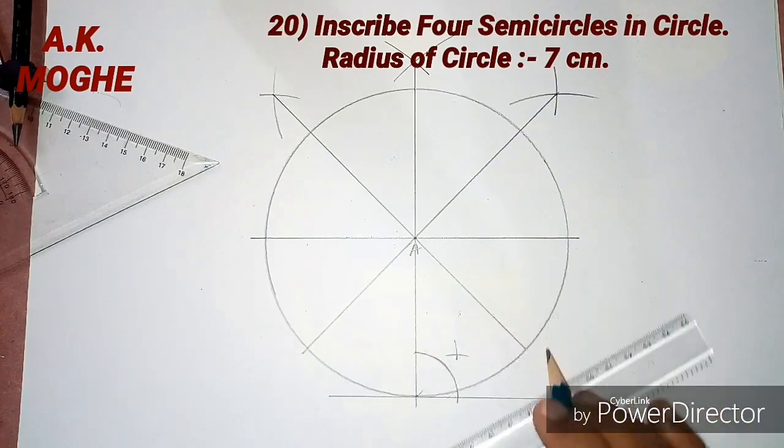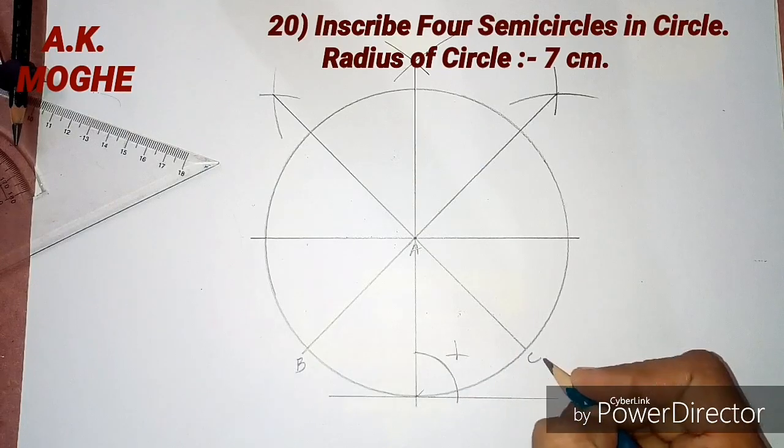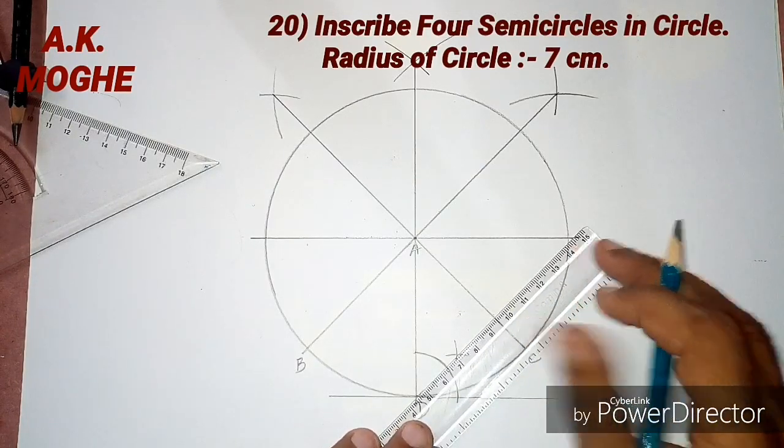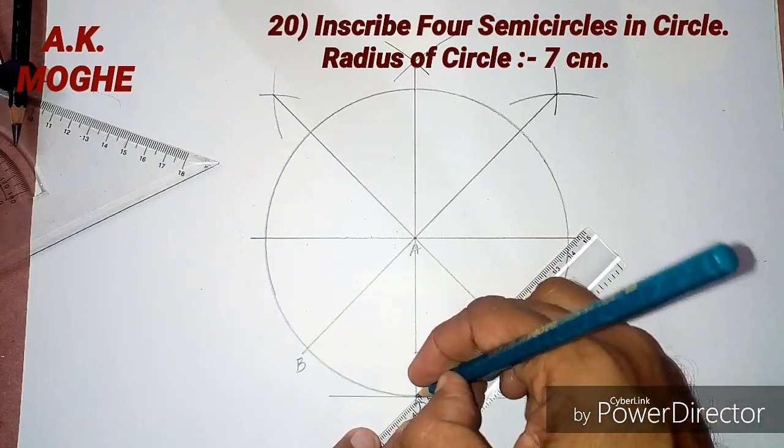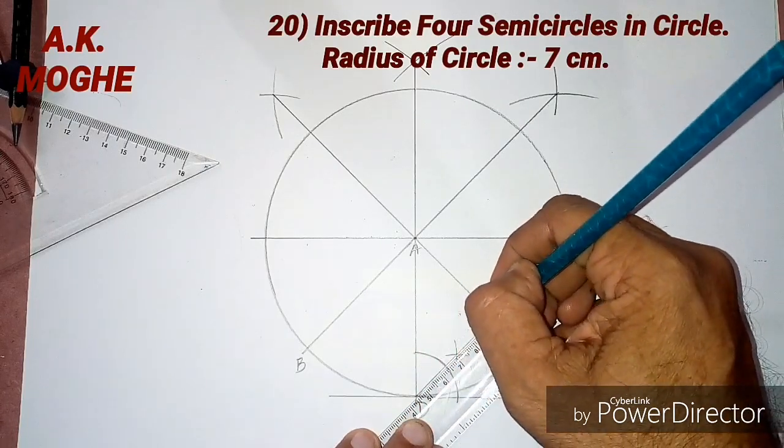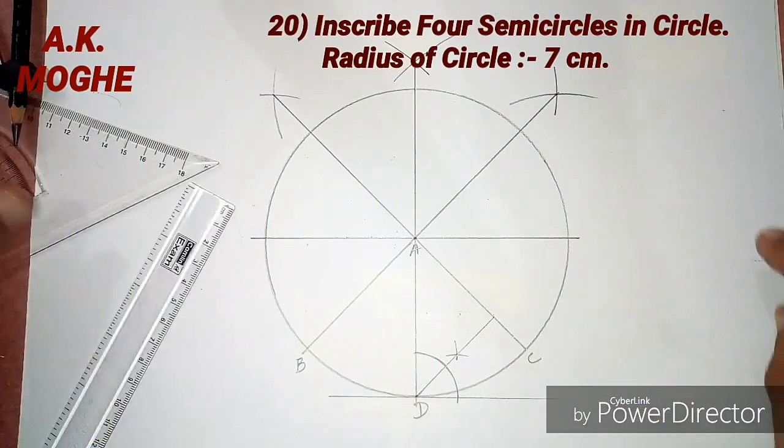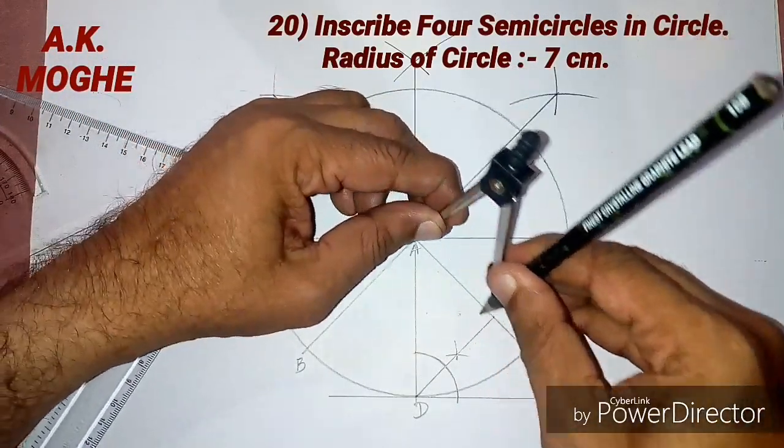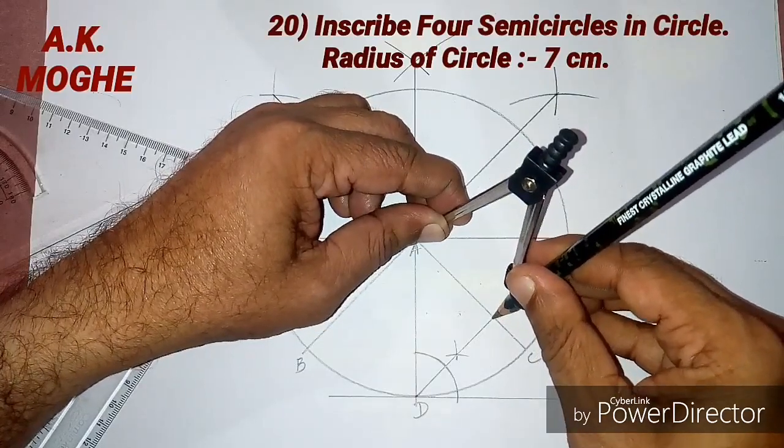The intersecting point of the angle bisector and one part of the circle will give me one side of the radius of the small circle we need to inscribe.